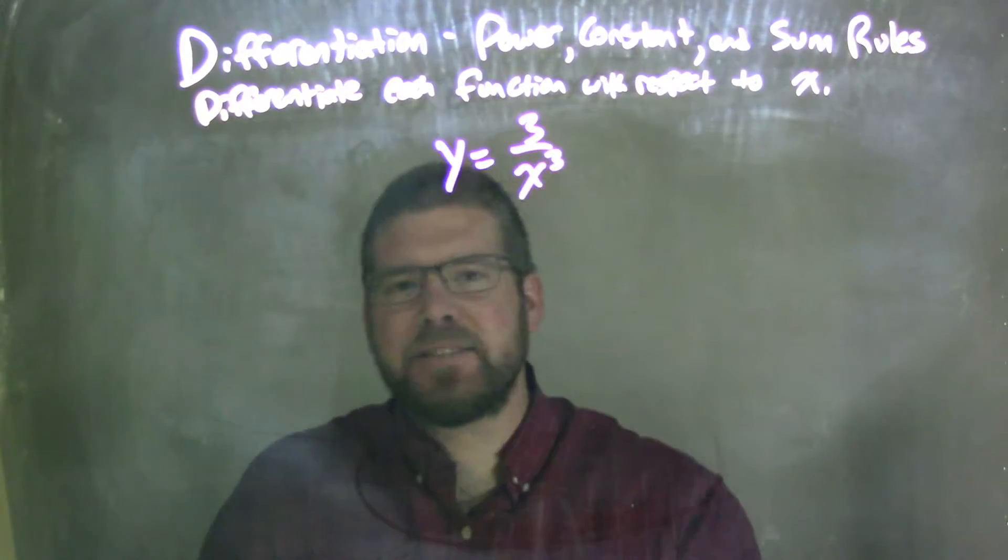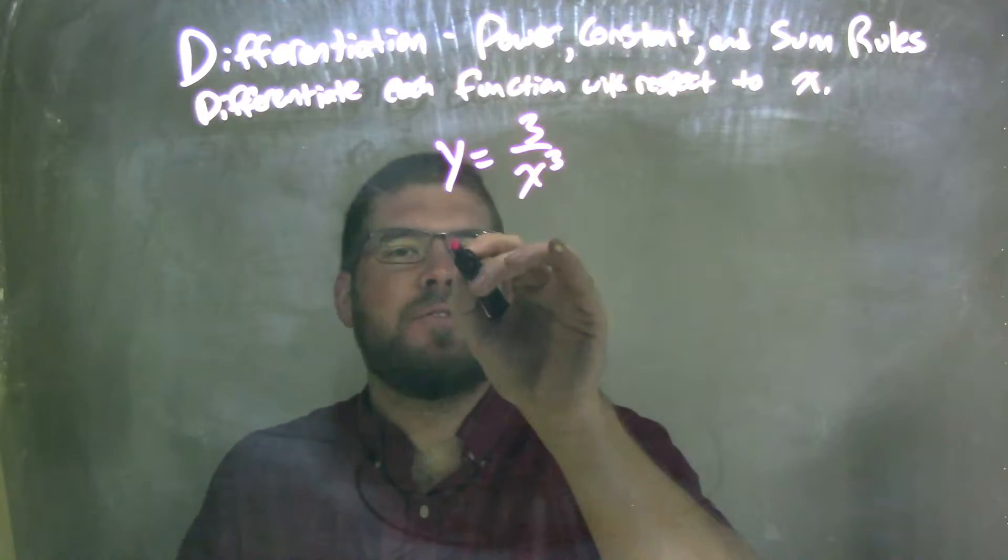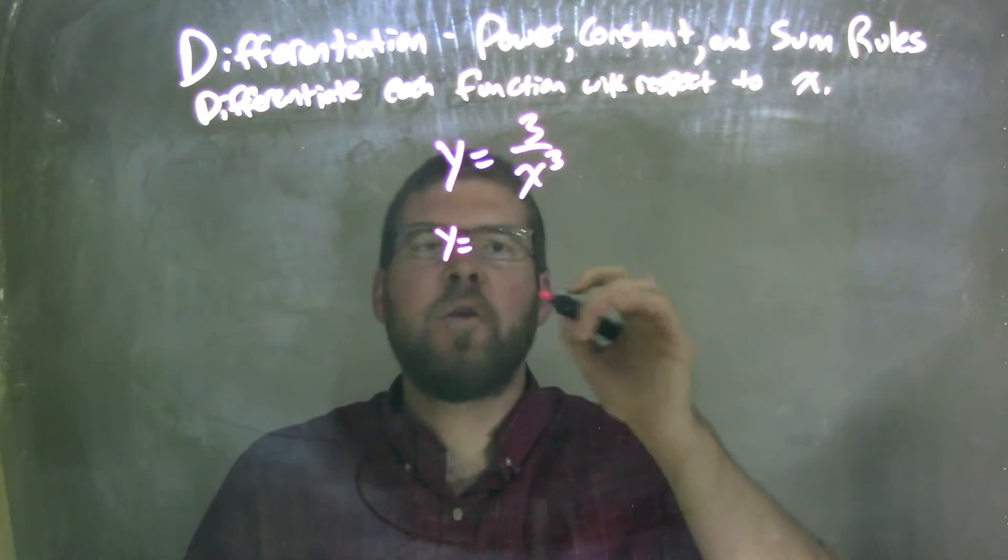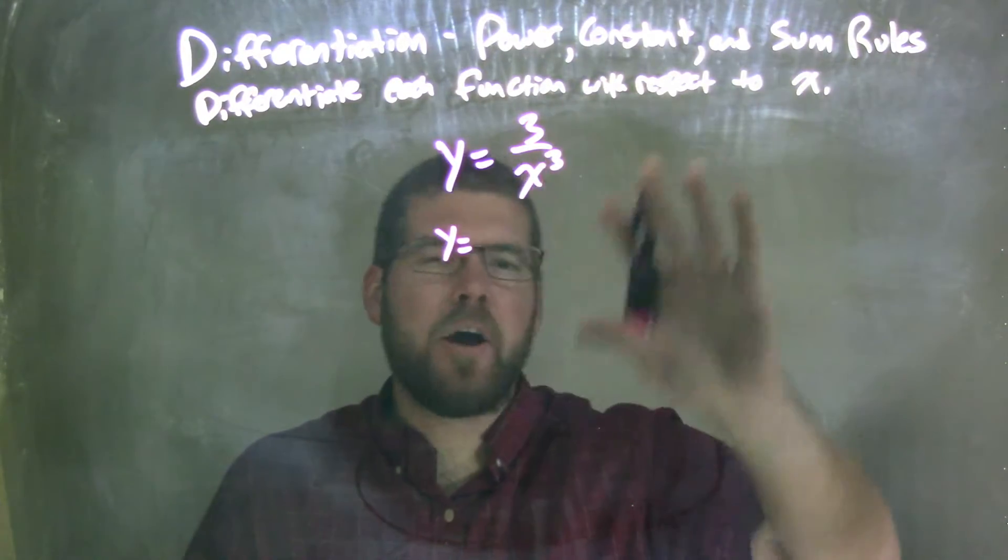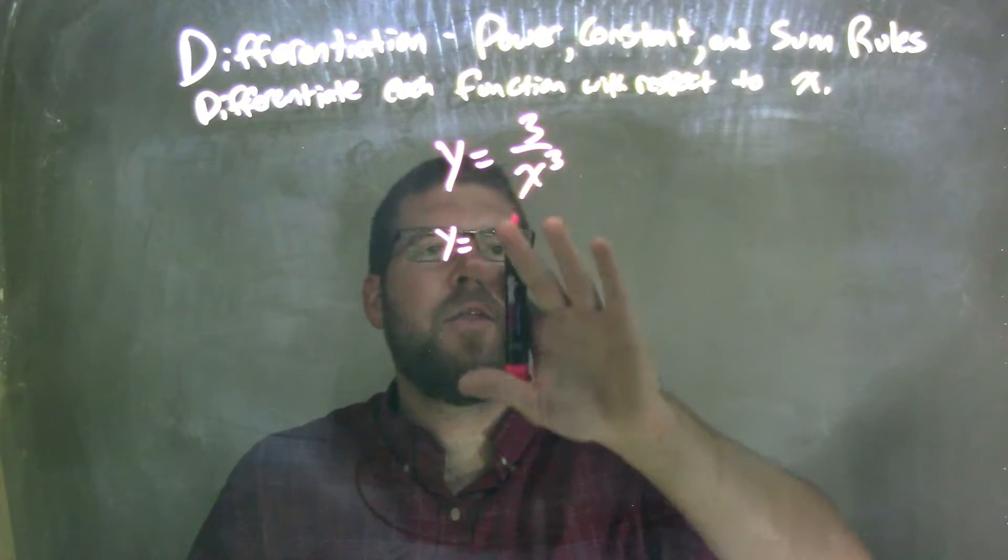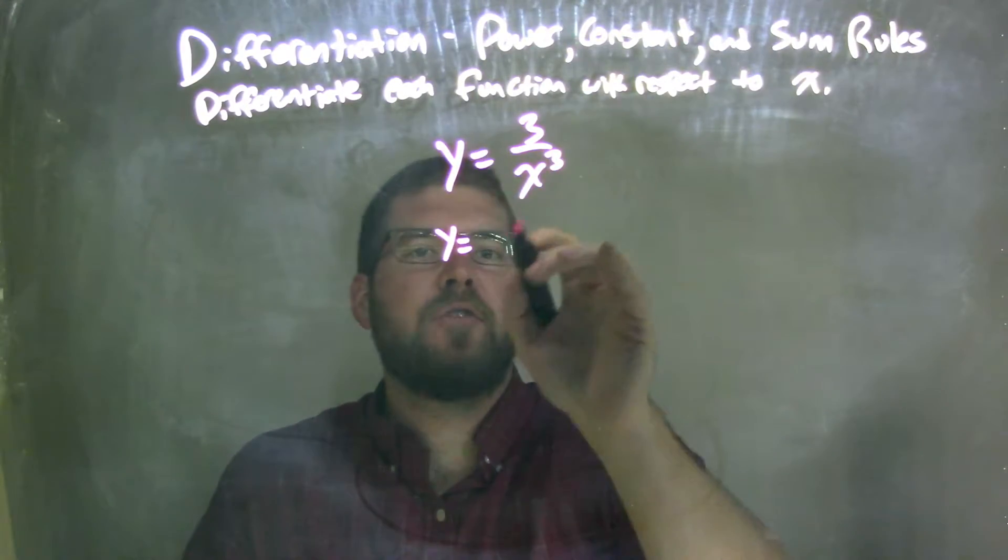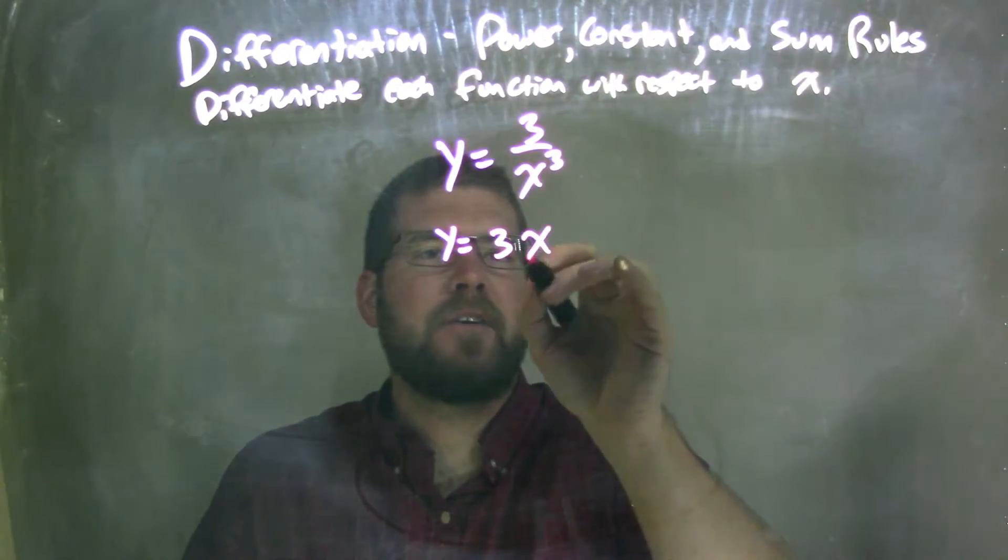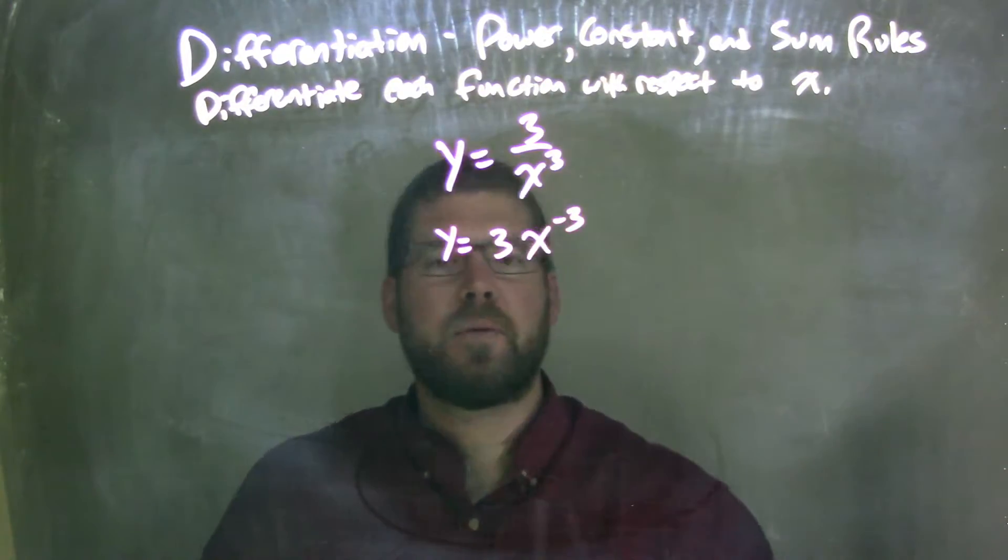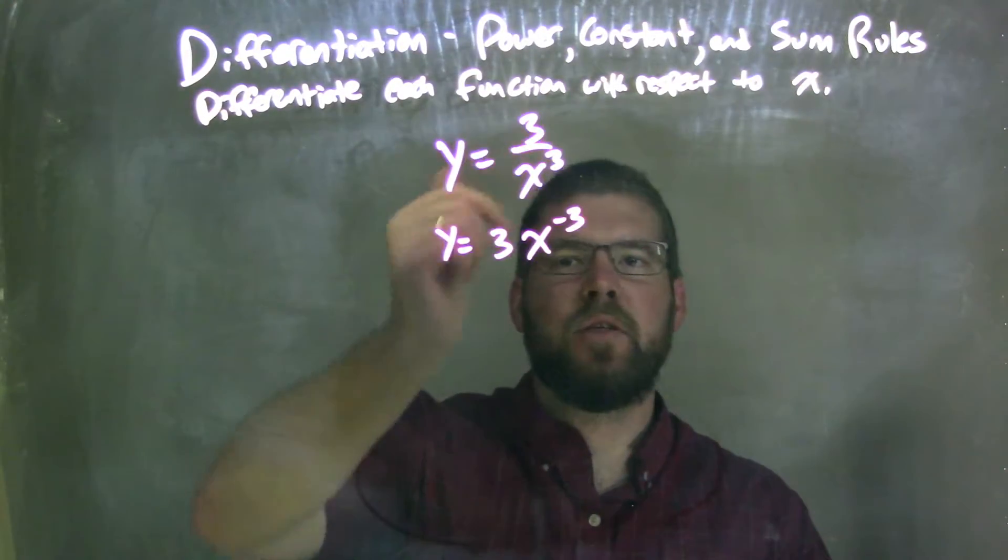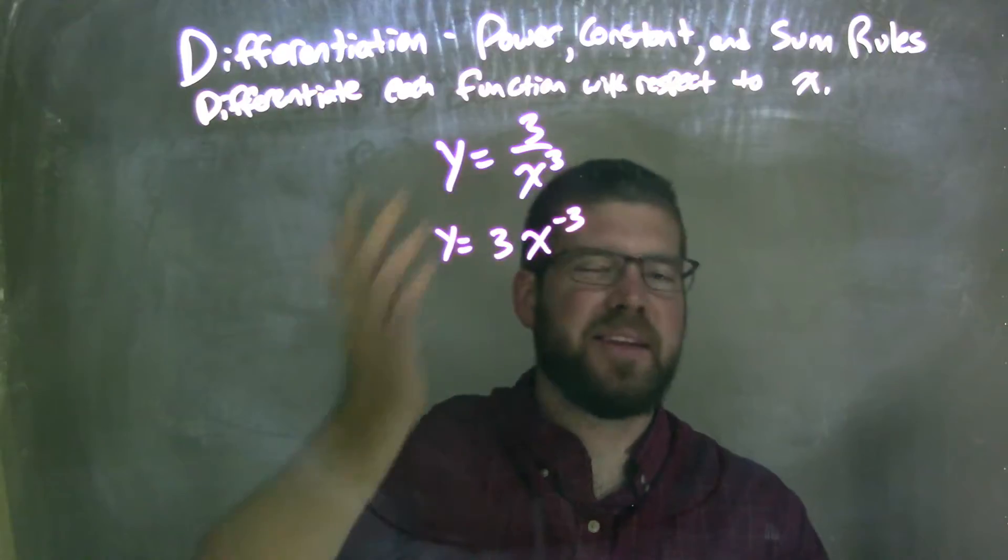Before I just hop in and start deriving, what I like to do is to rewrite this function where there's no fractions if possible, or just bring all the x's, the variables, to the numerator. So to do that, I can write this as 3x to the negative third power, okay? So 3 over x to the third power is the same thing as 3 times x to the negative third power.